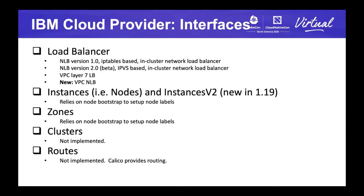The community moved with this new architecture and saw the need for a new Instances V2 interface as part of the cloud provider — that was new in 1.19 as an alpha, and it's expected to progress to beta. It's a more streamlined interface aligned with the new design of cloud providers. We also do some implementation for zones, needed for load balancer and scheduling. We don't do anything for clusters and routes — we rely on the CNI, the container network interface. In our particular case for the managed service, IKS uses Calico, and likewise for ROKS.